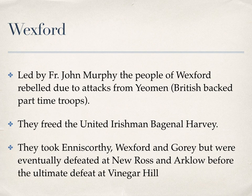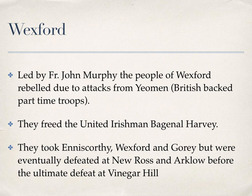The main exception was Wexford. The rebellion there was led by Father John Murphy. The people of Wexford rebelled because of attacks by the Yeomanry and militia — the Yeomanry being British-backed part-time troops and the militia being full-time troops. They initially won at Oulart, then took Enniscorthy and Wexford, where they freed a United Irishman known as Bagenal Harvey. They also took Gorey.